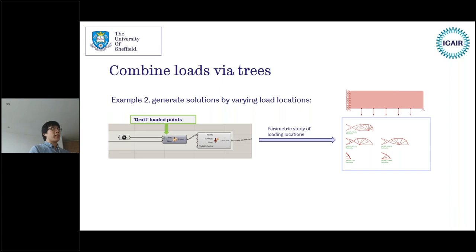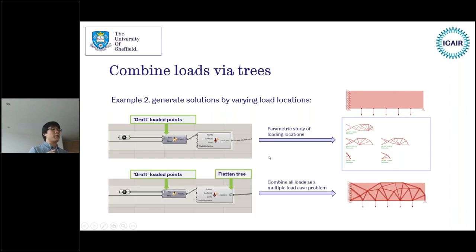This parametric approach has many other uses. You can do a parametric study by varying nodal locations to see how it affects the design — graft all the loaded points to create five independent optimization problems. Alternatively, if after creating all load cases you flatten the tree, this collects all load cases as a multiple load case problem. This gives a very easy way to create problems with different load cases. These examples show how to take advantage of Grasshopper data structures to create fascinating design problems very easily.